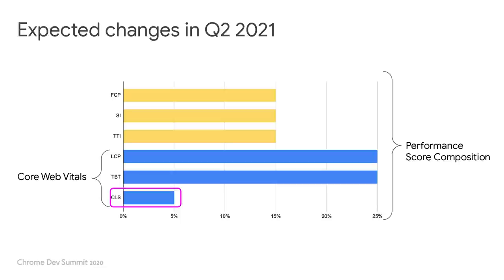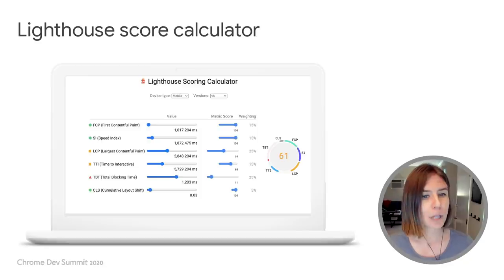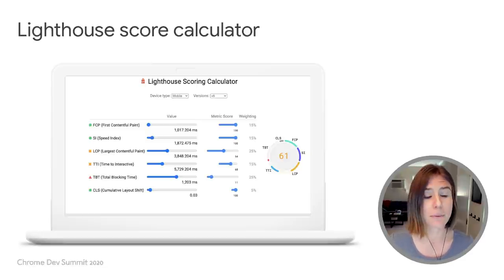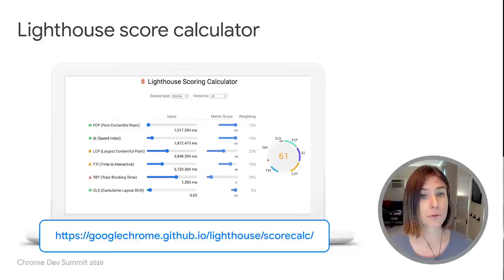Now that CLS has had time to mature, we want to adjust the weighting to make sure that we're aligned with Core Web Vitals. We are still calibrating our scoring curves and analyzing thresholds, so we don't have specific figures for you today, but an increased weighting of CLS is one of the primary changes you can expect in our next scoring update in Q2 of 2021. We'll add a link at the end of our slides for where you can stay up to date, and we also encourage you to check out the Lighthouse scoring calculator.